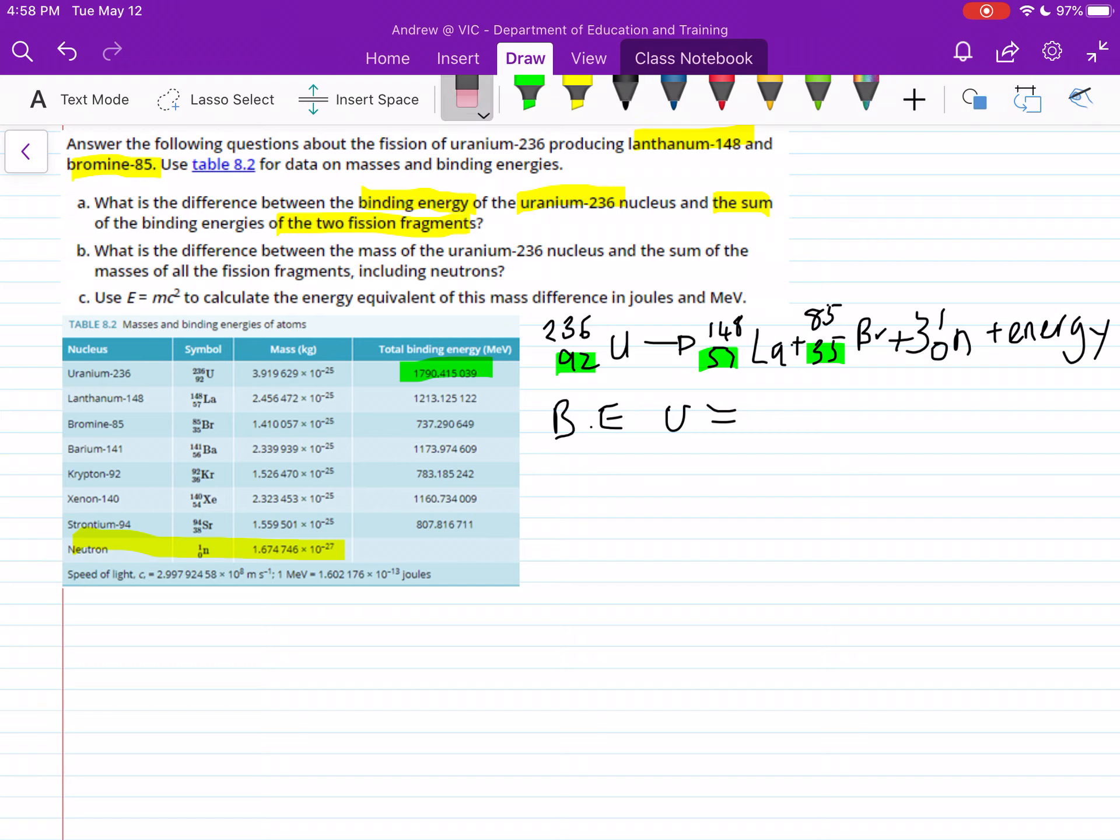This is uranium-236, because it's all different depending on how many atoms they have. So this is equal to 1790.415039 and this is mega electron volts, MeV.